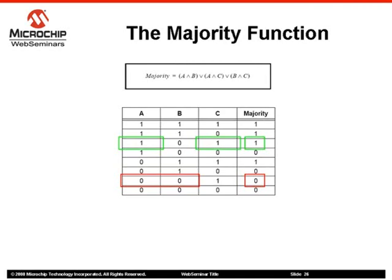The majority of the values can be expressed using two logic operators: AND and OR operators. As shown in the equation, it is the result of the OR of the AND operation between A and B, A and C, and finally B and C.